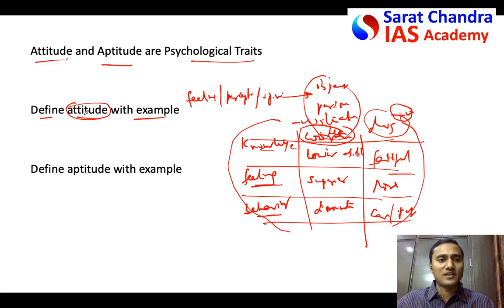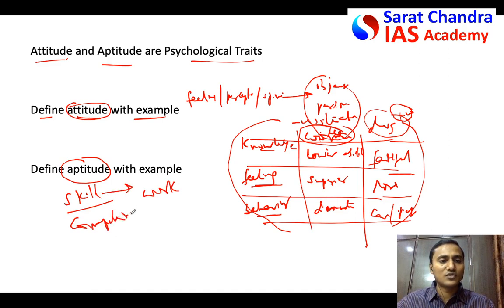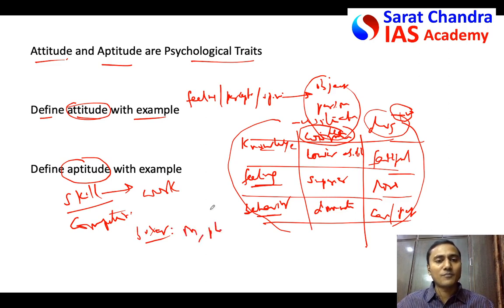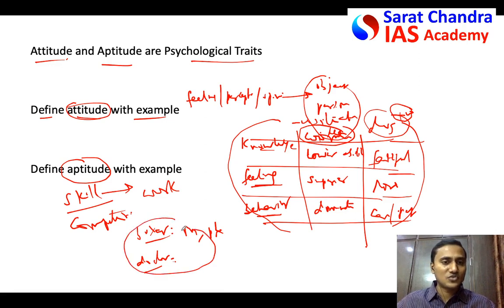Now come to aptitude. You can define aptitude as a skill or competence towards doing any kind of work. For example, take a boxer — a boxer requires both mental aptitude as well as physical aptitude. The type of punches requires physical skill. Or take a doctor — a doctor needs certain aptitude while making surgeries; he or she needs certain skill in the medical field. That is called aptitude.